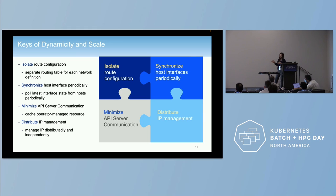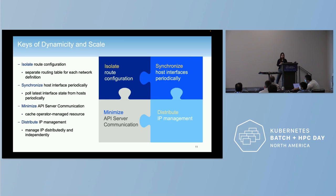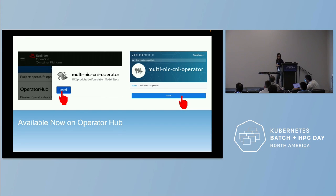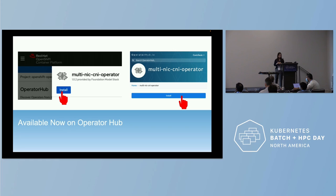The fourth piece is distribution — we do IP management in a distributed way, independently for each part, to ensure it can scale. ManVinix CNI is now already available on the operator hubs, not just on the OpenShift operator hubs but also on the community operator hub as well.